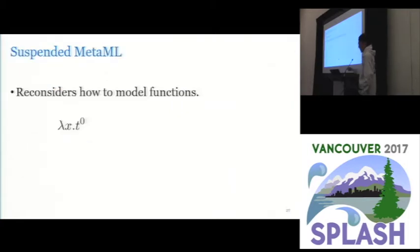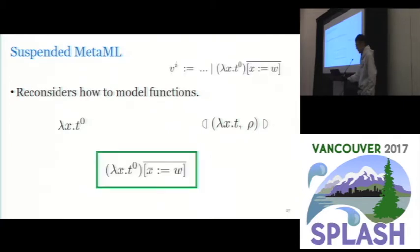So previously in explicit MetaML, functions are modeled as lambda abstractions. In a conventional environmental semantics, functions are modeled as closures. So here in suspended MetaML, we suspend explicit substitutions outside of a level zero lambda abstraction. So here's how we model functions.